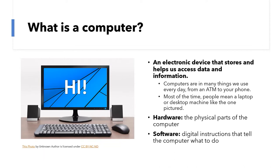I also want to introduce you to two different terms that you probably hear pretty often when people talk about computers. The first one is hardware. Computer hardware is any kind of physical part of the computer that you could touch — it might be the mouse, the screen, or the keyboard. All of those things are hardware. Software is stuff that makes the computer run that you can't touch. Software is the digital instructions that tell the computer what to do. For example, Microsoft Word is an example of software — that's a pretty common one that a lot of people have used.